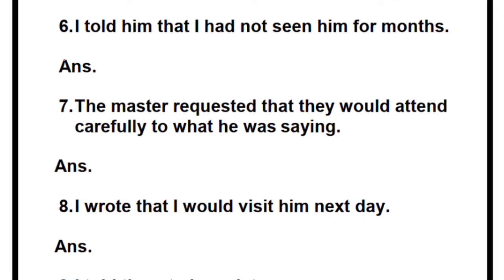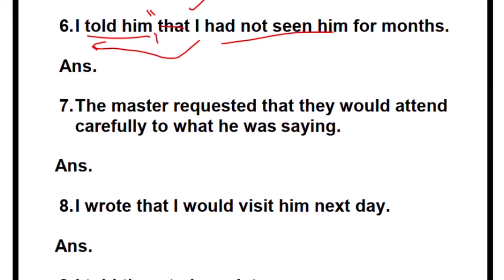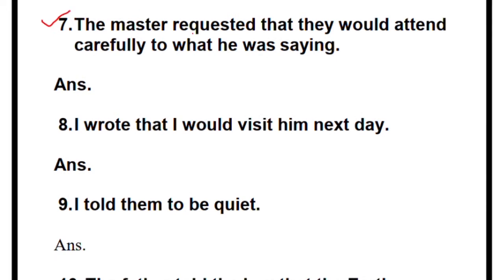Number six: 'I told him that I had not seen him for months.' You can write 'I said to him,' then add a comma, remove 'that,' and open the quotes. 'I' remains 'I.' 'Had not seen' is past perfect — change it back to present perfect: 'have not seen.' Who is 'him'? When speaking directly to someone, say 'you.' So: 'I told him, I have not seen you for months.' Full stop.